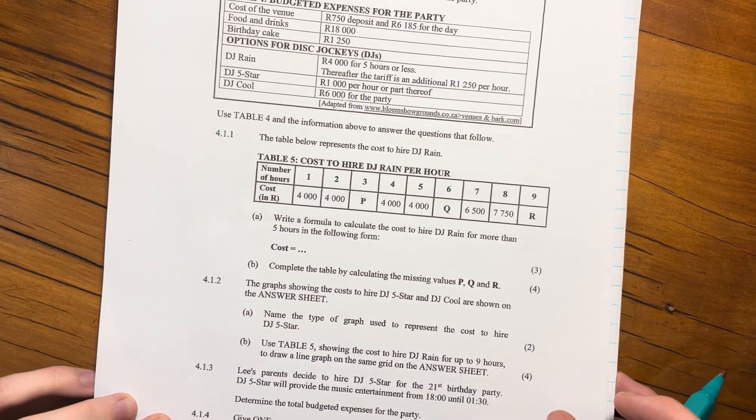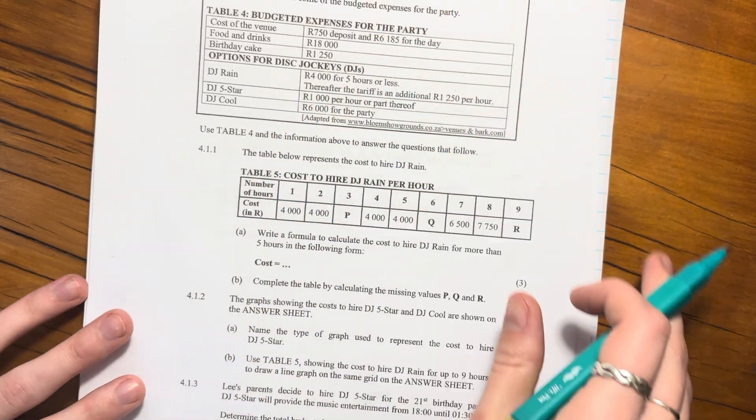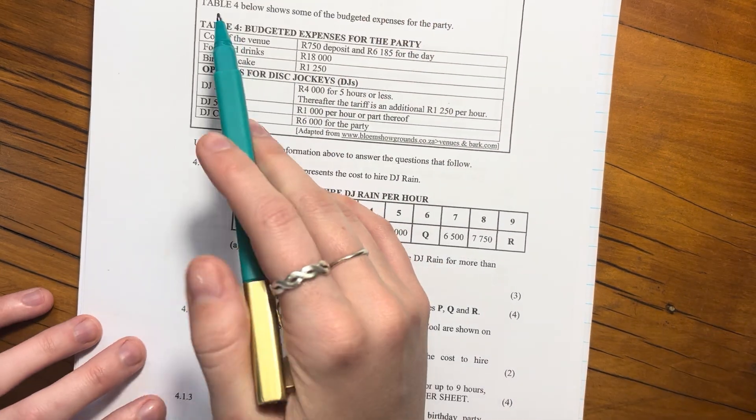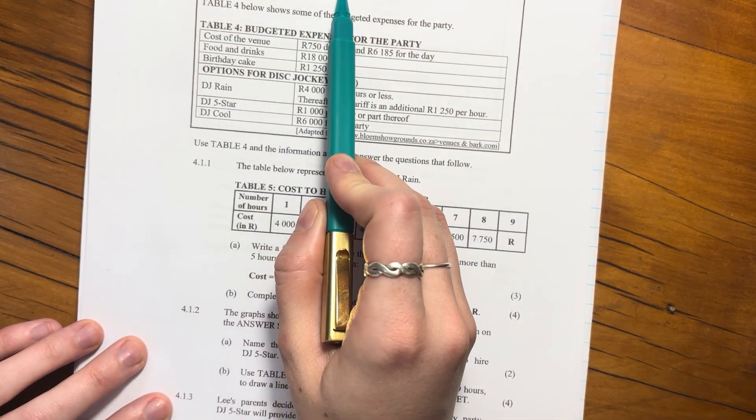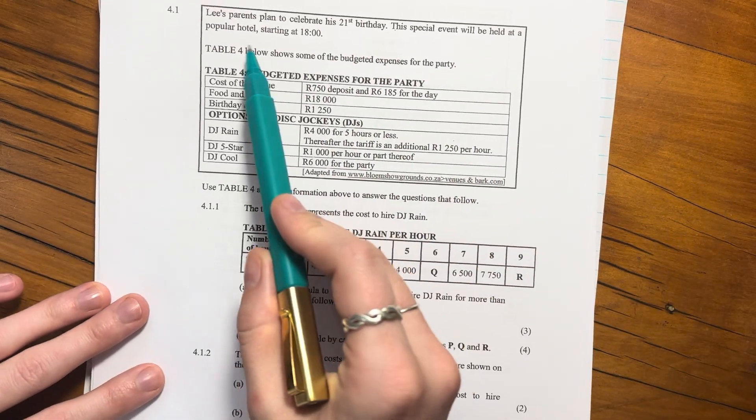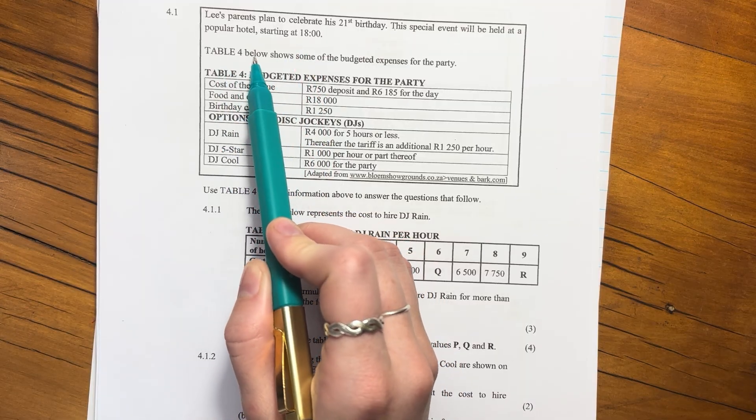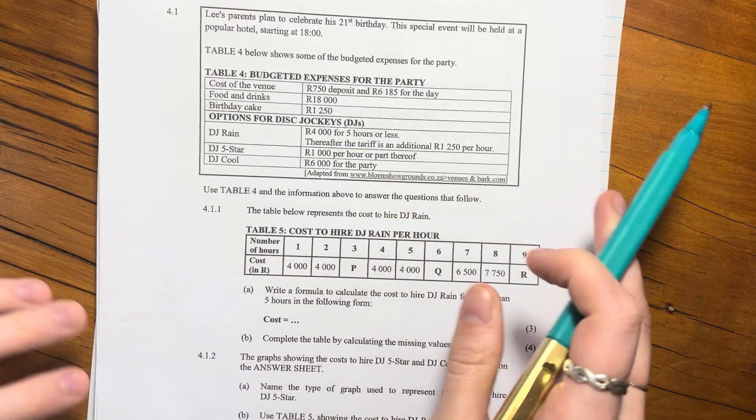Alright, let's do question four. So question four, a little bit more involved, but we can do it. We just need to be methodical. Lee's parents plan to celebrate his 21st birthday. This special event will be held at a popular hotel starting at six o'clock.